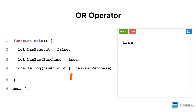Let's look at another example where we want to determine whether a user is a valid, active customer of an online shop based on whether they have an account or have made a past purchase. In this case, the expression evaluates to true since hasPastPurchase evaluates to true. The expression will only be false if both values are false.